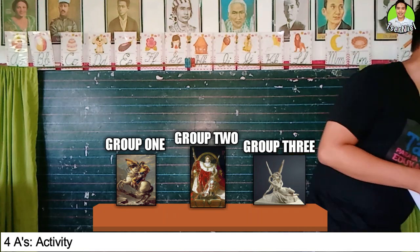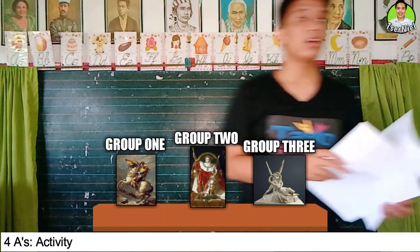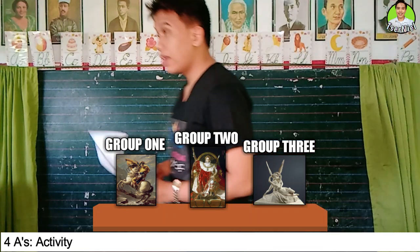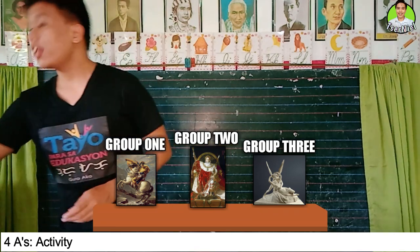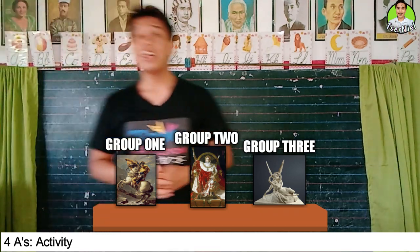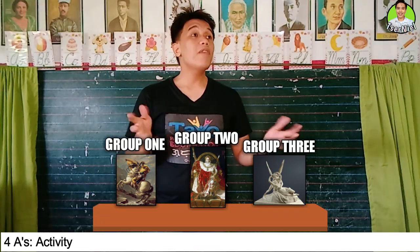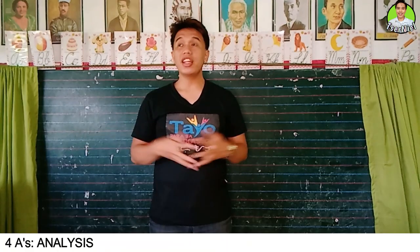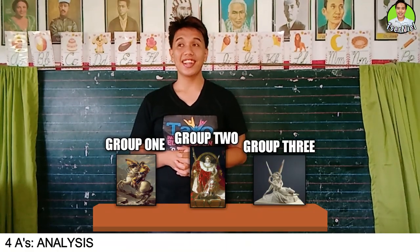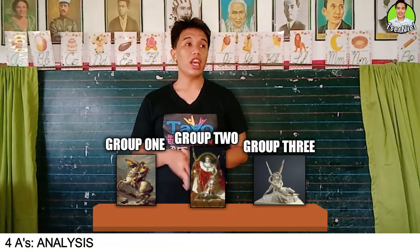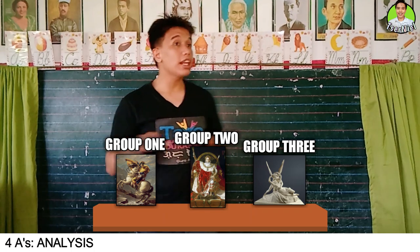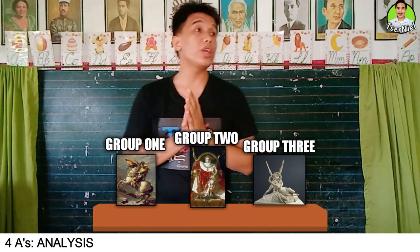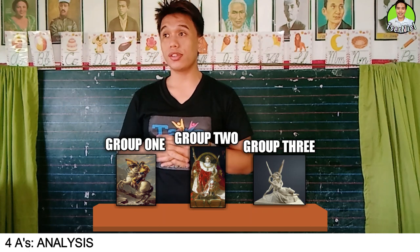Now I will give each group an observation table. Get one and pass. You can now begin the activity. Is everybody finished? Okay, if you are done, clap three times. One, two, three. Okay, you can now go back to your seats.